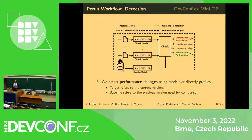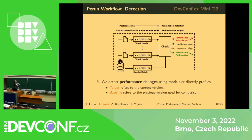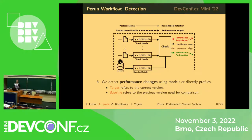The next step of the workflow is the detection phase, where you take your models or profiles and compare them. The current version is called the target, and the version you're comparing to is the baseline. You take the baseline models or profiles and using detection algorithms, compare them with your current version to obtain a result — such as performance degradation, no change, or perhaps an optimization. For example: my new release is 10% slower — something I should care about or try to fix.